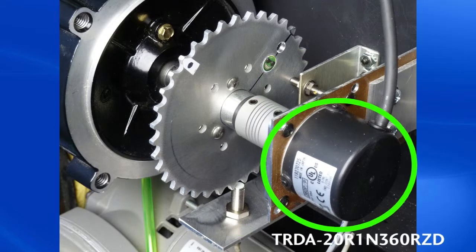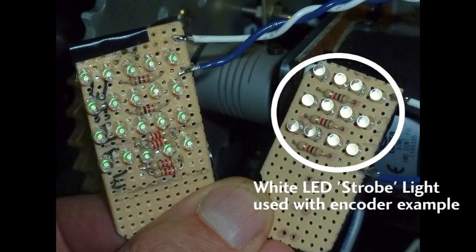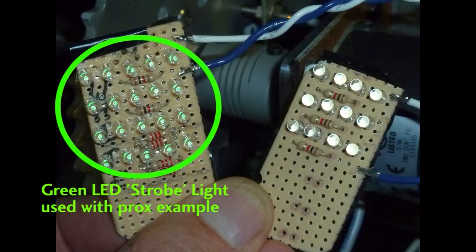We also have an encoder on channel 1 of the HSI card and an array of white LEDs that we'll use as a strobe light connected to output 1 and a green array of LEDs connected to output number 2.